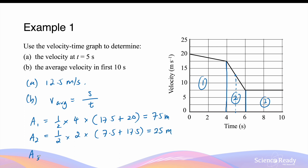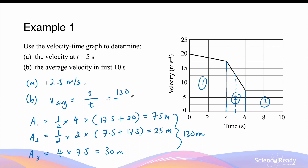Finally, Area 3 is a rectangle, for which the area is simply the length — which is 4 seconds — times by the width, which is 7.5 meters per second. This gives a displacement of 30 meters. In total, the displacement is 130 meters, which means, going back to the average velocity formula, the average velocity is 130 divided by 10 seconds: 13 meters per second.